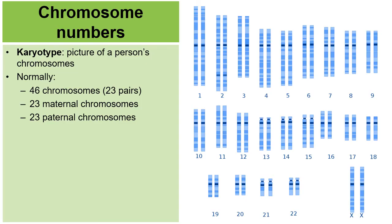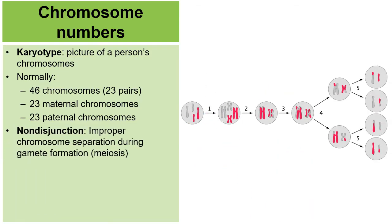The first chromosome disorder to discuss is a type called nondisjunction. This is the process of meiosis. Improper chromosome separation tends to happen during meiosis, when chromosomes are being pulled to opposite cells. Sometimes errors happen in the formation of the gametes — the sperm in males and the eggs in females. One of the first types of nondisjunction to discuss is trisomy conditions, where the cells that are created will have three of a certain type of chromosome.